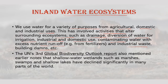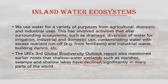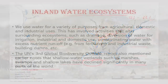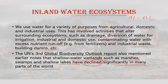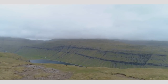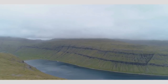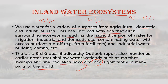The UN's Third Global Biodiversity Outlook report notes that shallow water wetlands such as marshes, swamps and shallow lakes have declined significantly in many parts of the world. Between 56–65% of inland water systems suitable for intensive agriculture in Europe and North America had been drained by 1985. 73% of marshes in northern Greece have been drained since 1930, and 60% of the original wetland area of Spain has been lost.